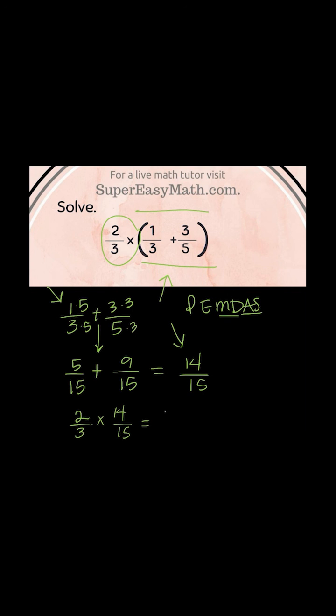Two times 14 is 28. Three times 15 is 45. That fraction cannot be simplified, so the answer to this order of operations problem is 28 over 45.